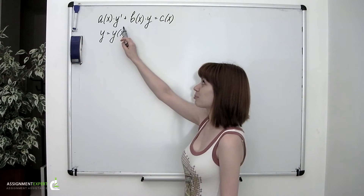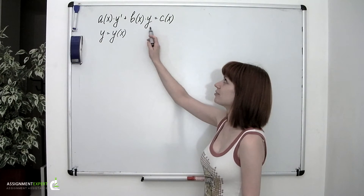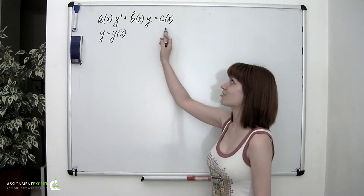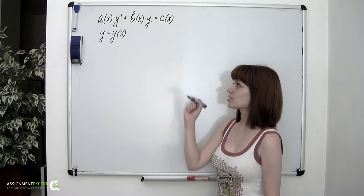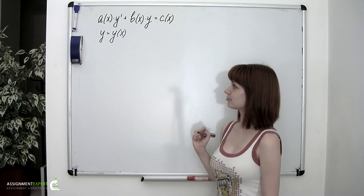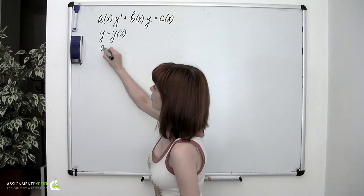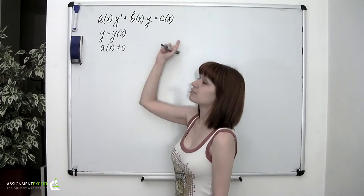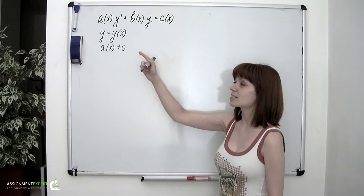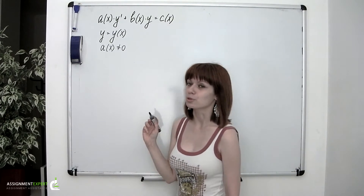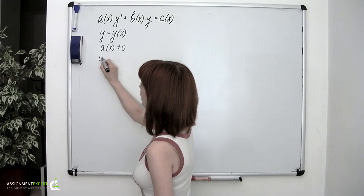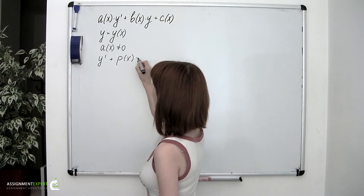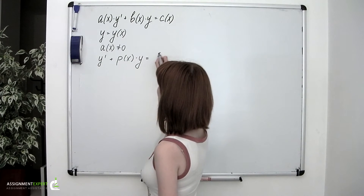An equation of the form A(x)·y' plus B(x)·y equals C(x), where y is an unknown function and A(x), B(x), and C(x) are the given functions, is called a linear first-order differential equation. Assuming that A(x) never equals zero, we can divide both sides by A(x), and therefore this equation will take the form: y' plus P(x)·y equals F(x).